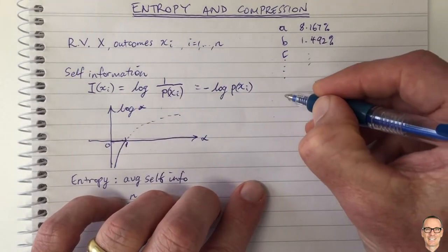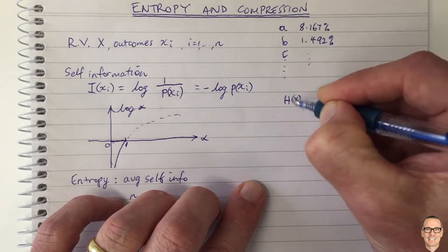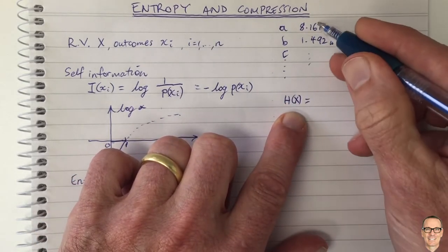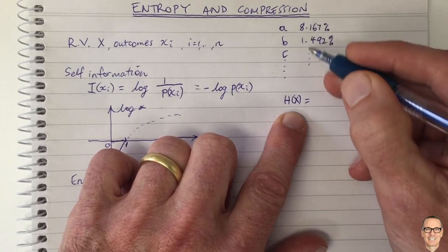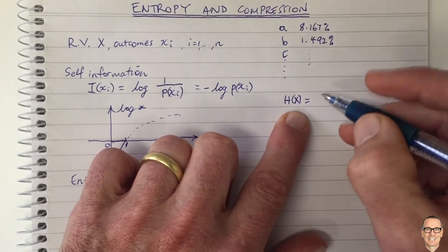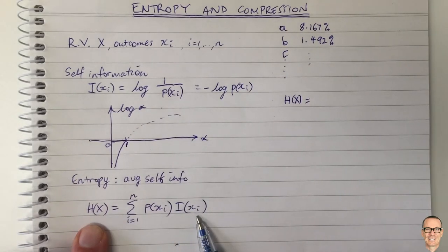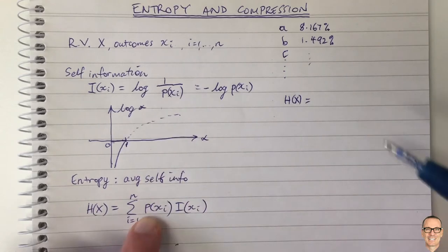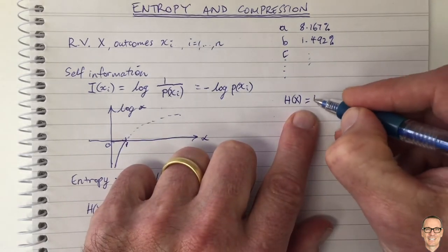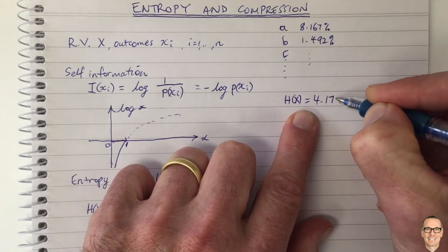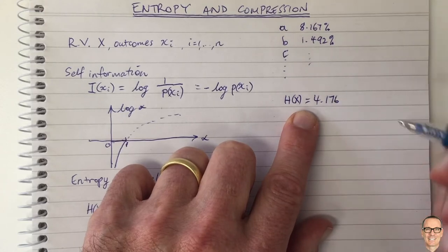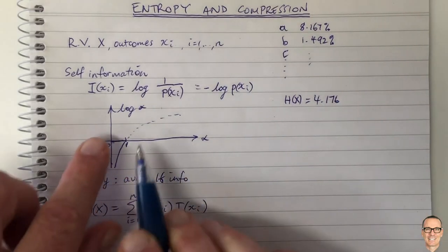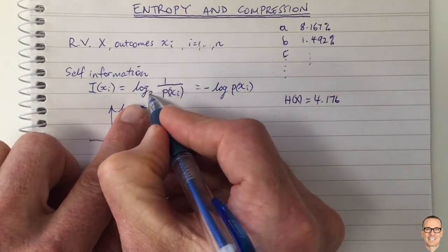So these are the potential realizations of the random variable and we convert the percentages into probabilities and we can work out the entropy of the letters in the English language and this equals, if you look this up on Wikipedia and find these numbers and if you put them in this formula here for the entropy, you'll find that this is 4.176. Now what does that mean? What's the units of this? This is if we take the log to the base 2.